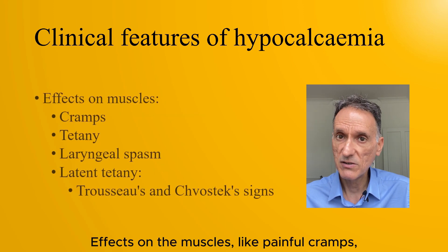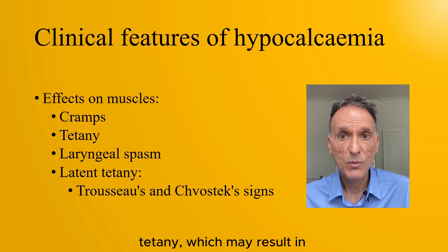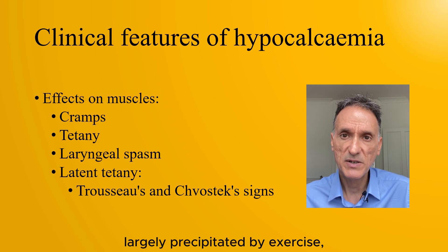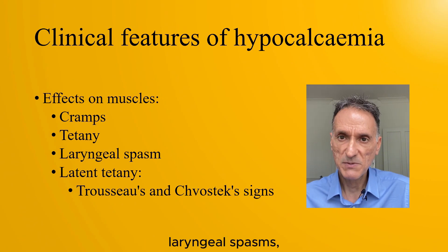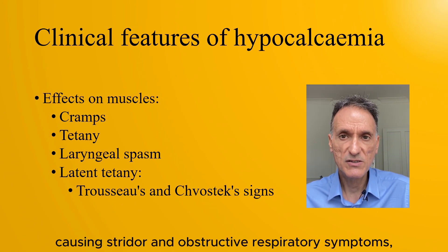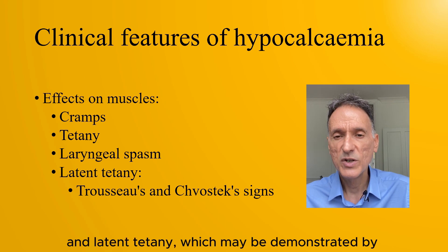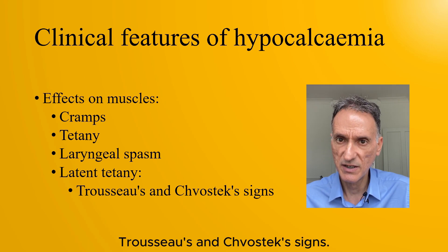Effects on the muscles include painful cramps, tetany — which may result in spontaneous muscular spasms largely precipitated by exercise — laryngeal spasms causing stridor and obstructive respiratory symptoms, and latent tetany, which may be demonstrated by Trousseau's and Chvostek's signs.